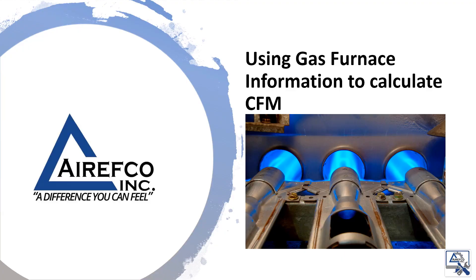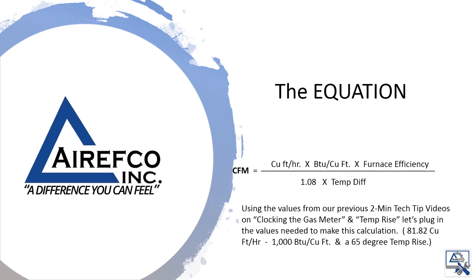In order to calculate CFM for a gas furnace we need some information to plug into the equation. The equation for CFM on a gas furnace is cubic feet per hour times BTUs per cubic foot times our furnace efficiency, divided by 1.08 times the temperature difference.